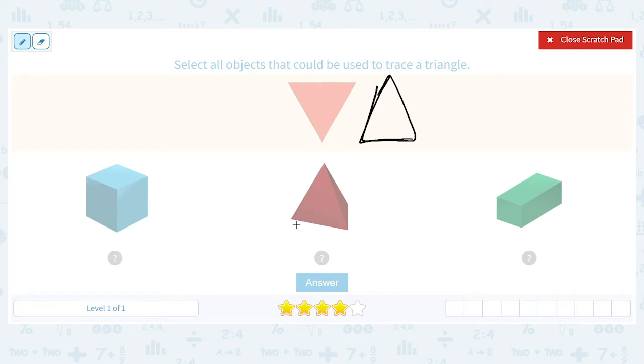Next we have a pyramid. A pyramid, I see a triangle. So if I put this on a piece of paper, I could trace a triangle.